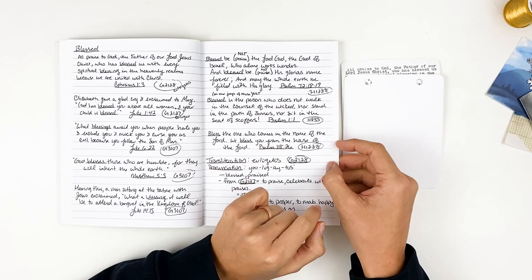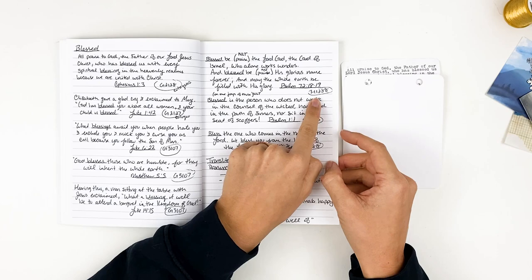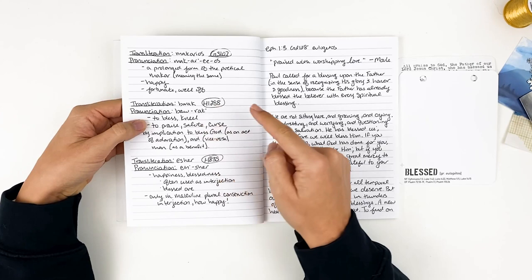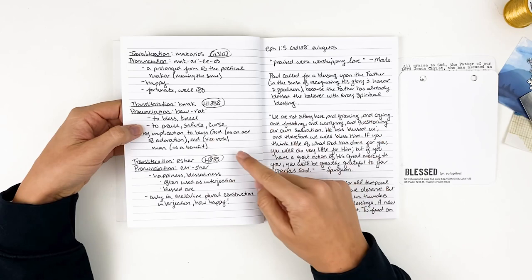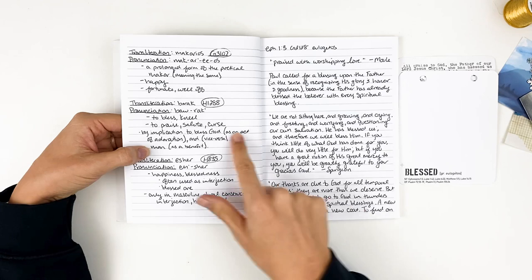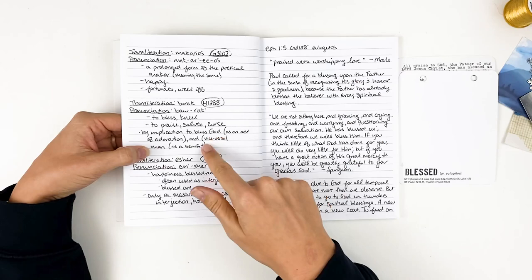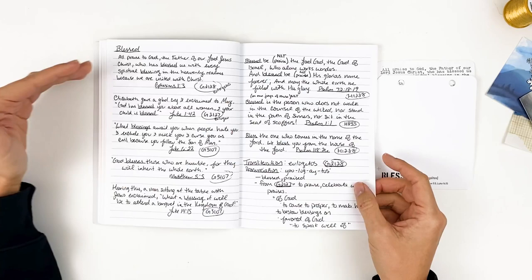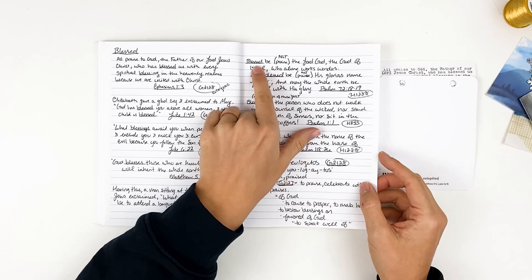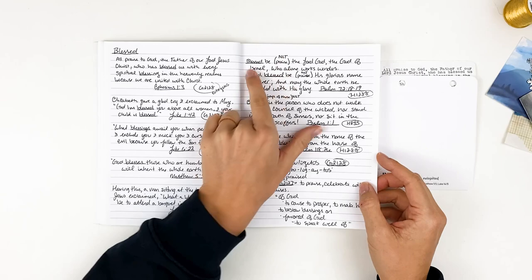And so this word blessed actually uses H1288, which is Barak, to bless, kneel, to praise, salute, curse, by implication to bless God as an act of adoration and vice versa, man as a benefit. So praise, salute, an act of adoration, whether that be towards God or God towards us. And so it's not totally different than these other words, but there are some slight differences. And you'll see that it kind of helps you understand the difference between this verse as opposed to Ephesians 1:3, that there is a little bit of a difference between those.